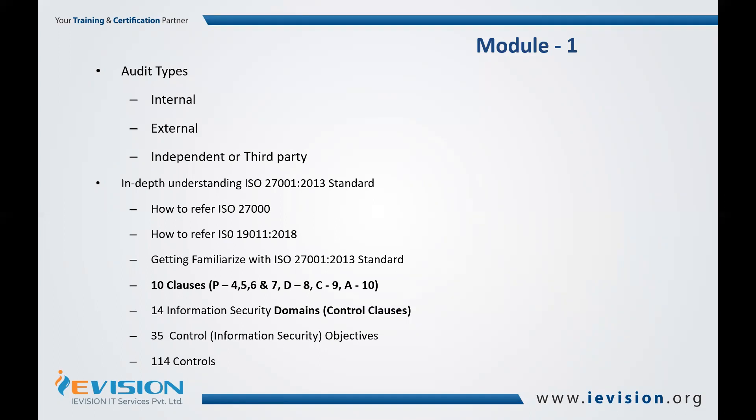There are 10 clauses and 14 information security domains, also called control clauses. There is a difference between these: the 10 clauses are part of the PDCA framework — Plan, Do, Check, Act — that is the Deming cycle. Clauses four through seven are part of Plan.